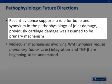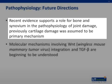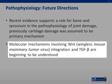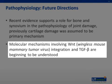Recent evidence supports a role for bone and synovium in the pathophysiology of joint damage, whereas previous cartilage damage was assumed to be the primary mechanism. Molecular mechanisms involving WNT — which stands for the wingless mouse mammary tumor virus — and its integration with TGF-beta are just now beginning to be understood.